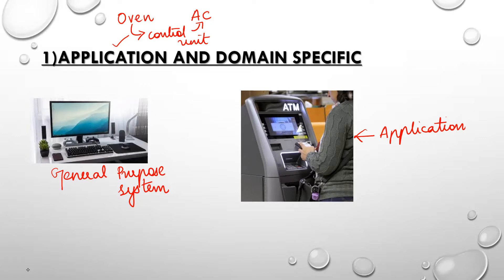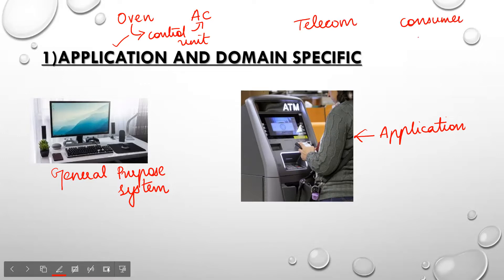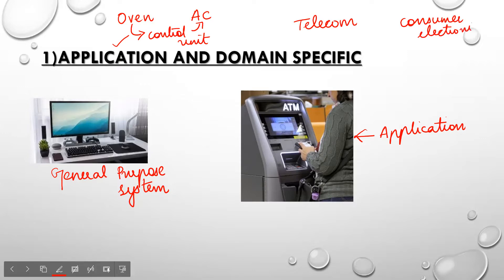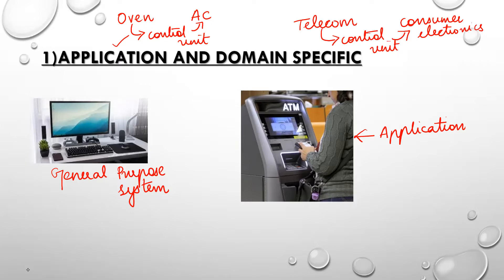The next is domain specific. Consider you have an embedded system for the telecom industry and you have an embedded system for consumer electronics. Your consumer electronics are your refrigerator, your AC, your washing machine, and many such things. The control unit used in your telecom industry cannot be used as the control unit for your consumer electronics. That is why it is called domain specific. So all your embedded systems are application specific and domain specific.